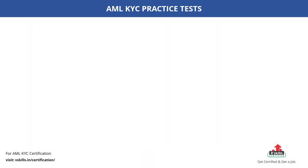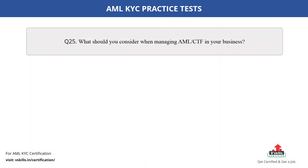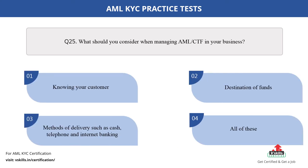Question number 25. What should you consider when managing AML or CTF in your business? The options are: A. Knowing your customer; B. Destination of funds; C. Methods of delivery such as cash, telephone and internet banking; D. All of these. The correct answer is option D.